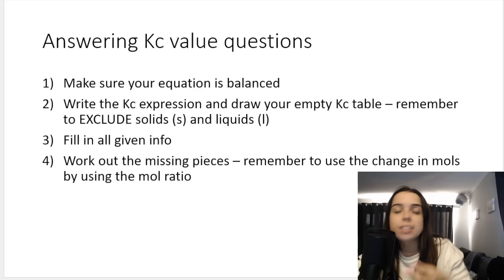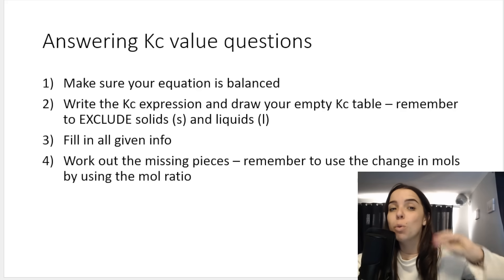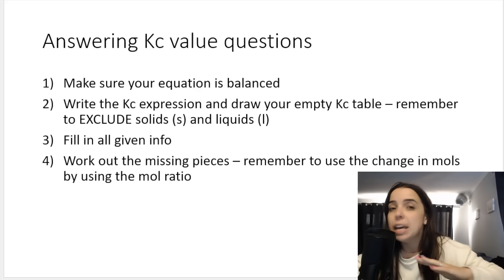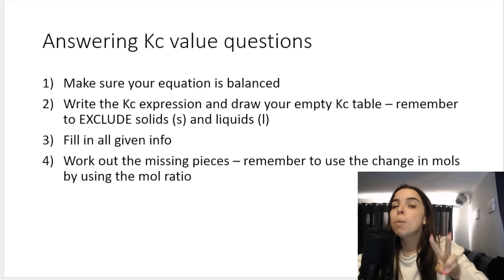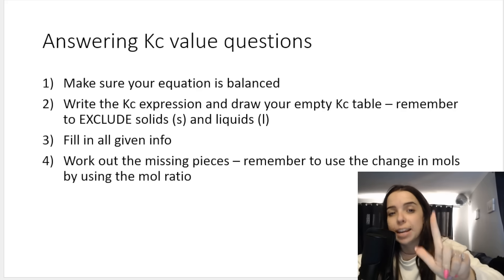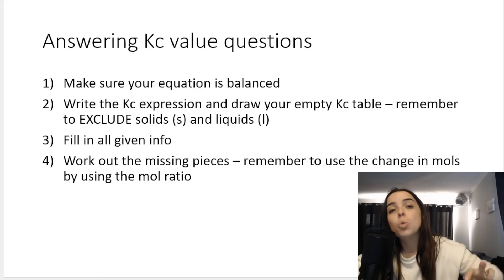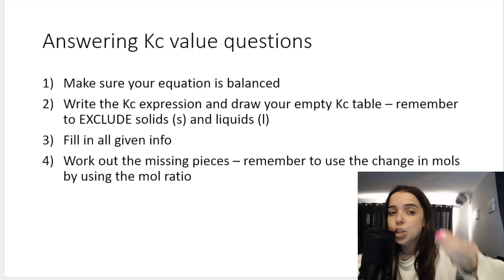When answering KC value questions, you might be required to work forwards or backwards. Here are a few guidelines — steps — that I follow to make sure I'm doing the question properly. First, make sure your chemical equation is balanced. It's very important. If it's not balanced, everything will be wrong. Then I immediately write out my KC expression, because that will get me one mark. And I draw my empty KC table, remembering to exclude solids and liquids from both the table and the KC expression. We only include gases and aqueous.